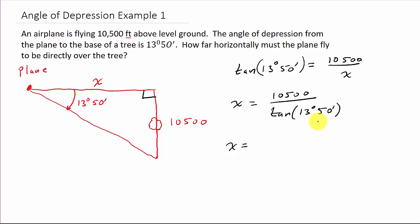You've hit tangent on your calculator. So you've got 10,500, then hit the divided sign, and then hit tangent on your calculator. And then we're taking the tangent of 13 degrees, so type in the 13. And then for the 50 minutes, you'll do plus 50 divided by 60, and then close your parentheses.